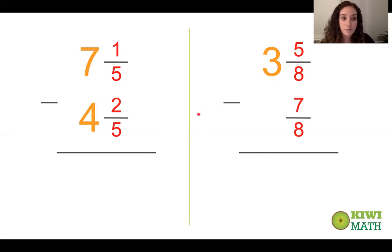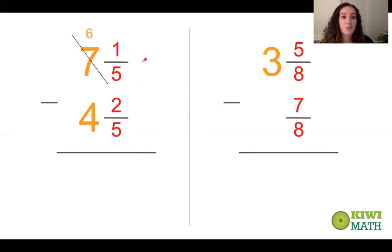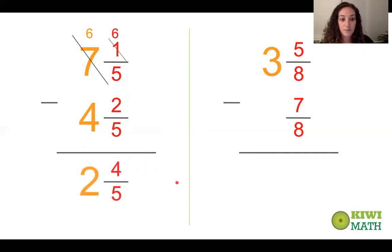Seven and one fifth minus four and two fifths. Fractional parts: one fifth minus two fifths — we do not have enough to subtract. We go to the wholes, cross out seven, take away one whole, so that's six. There are five fifths in one whole, so we add it to the one fifth we have, giving us six fifths. Six fifths minus two fifths is four fifths, and six minus four is two. So we have two and four fifths.